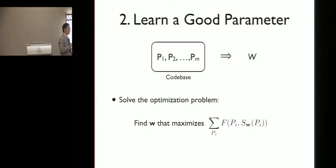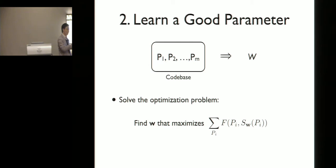The second step of our approach is to learn a good parameter W from the existing code base. Learning W corresponds to solving an optimization problem: find W that maximizes the number of proved assertions over the entire code base. However, it is impossible to solve this mathematically because the objective function involves running the static analysis over the entire code base.